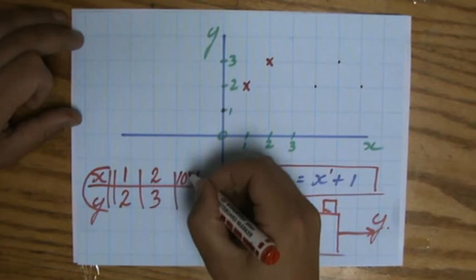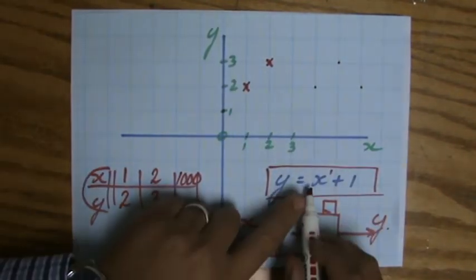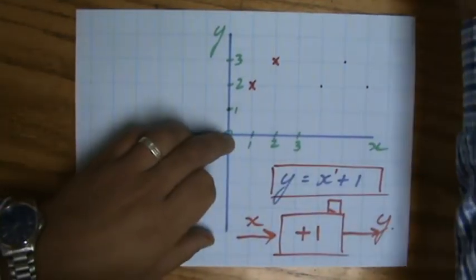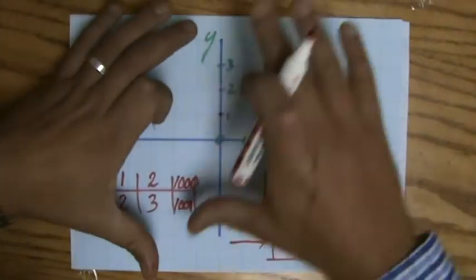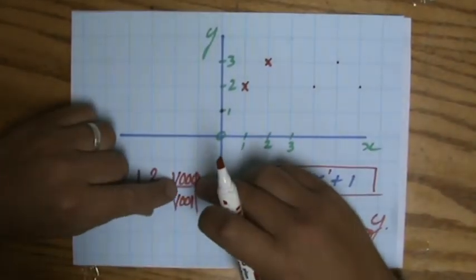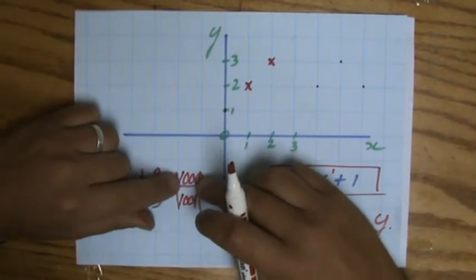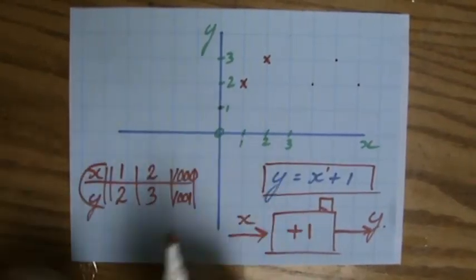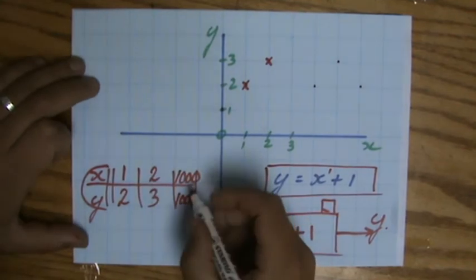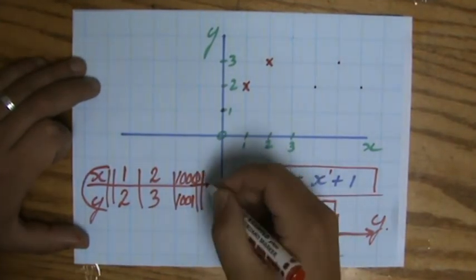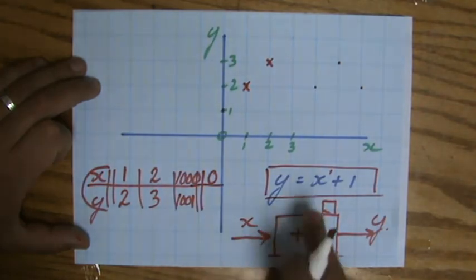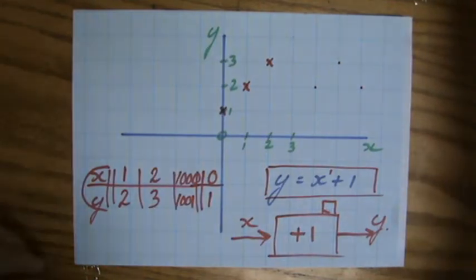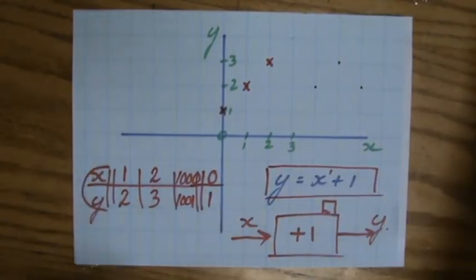I always find a third point just to check myself. Let's say I take the point one thousand. A thousand plus one is a thousand and one, but that is a little bit difficult to graph because that's not going to fit on this piece of paper. Although that is a correct point, it's not a very wise point to choose because it doesn't fit on my graph. I'm going to take one more point. Let's say for x is zero: zero plus one is one. That would be my third point. All three of them on one line, then I know I didn't make a silly mistake.